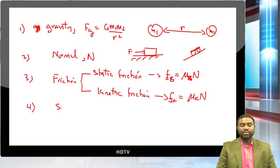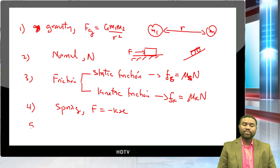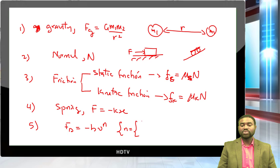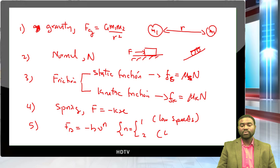The fourth force is the spring force, which obeys Hooke's law: F = kx. The fifth force is the drag force: F_d = negative b * v^n, where n equals one for low speeds and two for high speeds.